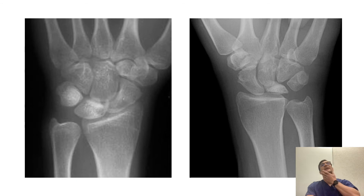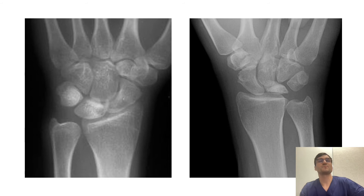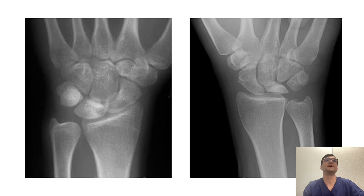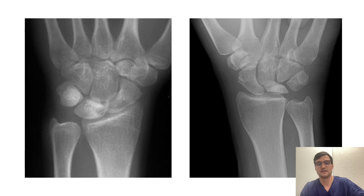Here are some example images from Radiopedia. You can see in the image on the left some whitening and sclerosis of the lunate, and then in the image on the right you can see progression to a collapsed lunate. So this would be an example moving from a stage two on the left to a stage three.